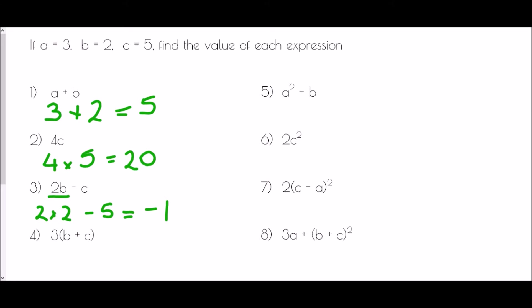In number 4, we have brackets involved, so with BIDMAS they come first. The first thing we need to do is complete the bracket: b plus c is 2 plus 5. The bracket gives us 7, and we have 3 in front of that bracket. A number in front of a bracket means multiply, so it's 3 times 7, which is 21.